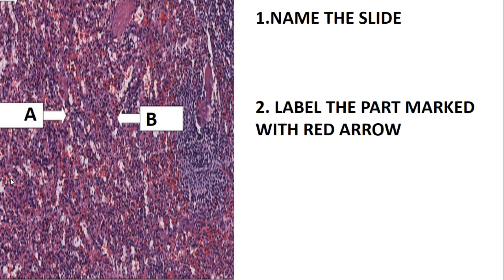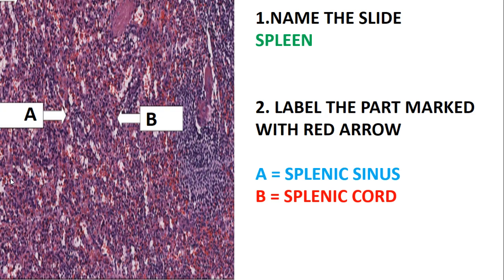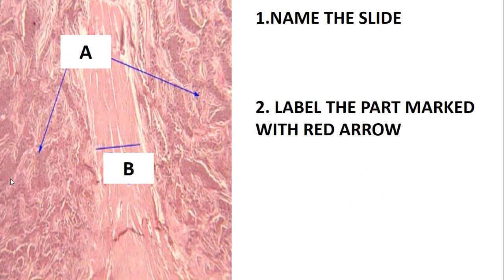Name this slide — this slide is the spleen. Right now we are looking specifically at the red pulp and its contents. The red pulp contains the splenic sinuses, which consist of blood vessels and blood cells, and the splenic cord, which contains macrophages, sinusoids, lymphocytes, and many other components. Label the parts marked with letters: A is the splenic sinus and B is the splenic cord.